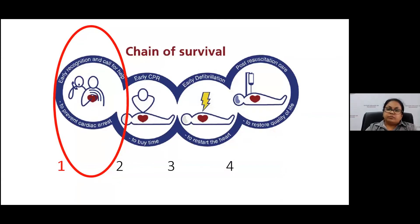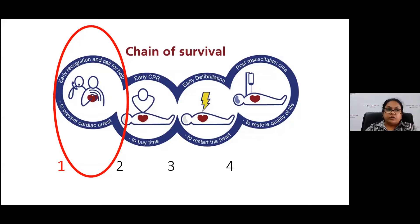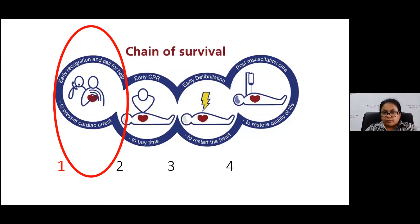The ultimate worry for a clinician is if a patient goes into cardiac arrest. The chain of survival concept was established to get a good outcome from a cardiac arrest. Its components include: early recognition and call for help to prevent cardiac arrest; early CPR to buy time; early defibrillation to restart the heart; and good post-resuscitation care. The first component — early recognition — is key: if we identify these patients early, we can prevent a cardiac arrest.